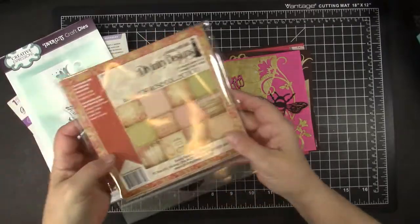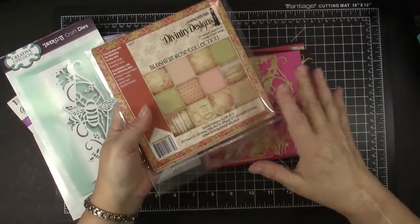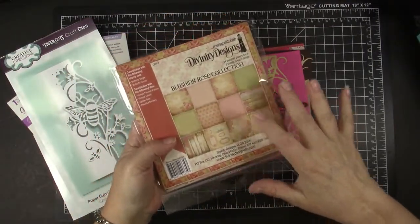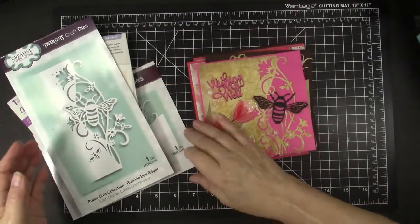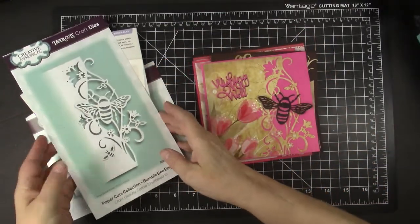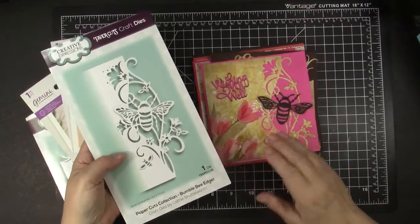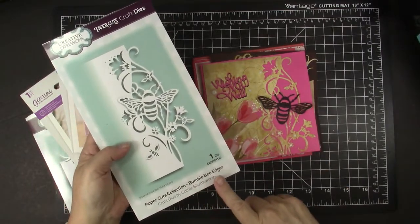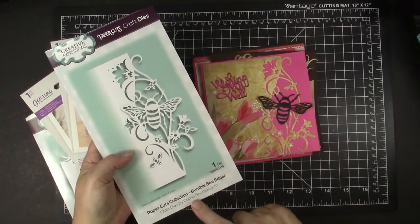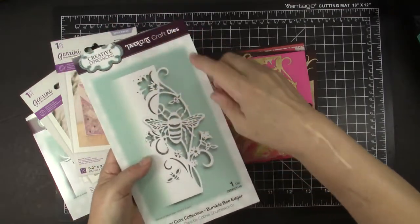So this is the collection of papers that I used on all of the cards, Blushing Rose from Divinity Designs, and here are the dies that I used. This first one I'm using the Bumble Bee Edger die by Kathy Shuttleworth at Creative Expressions.